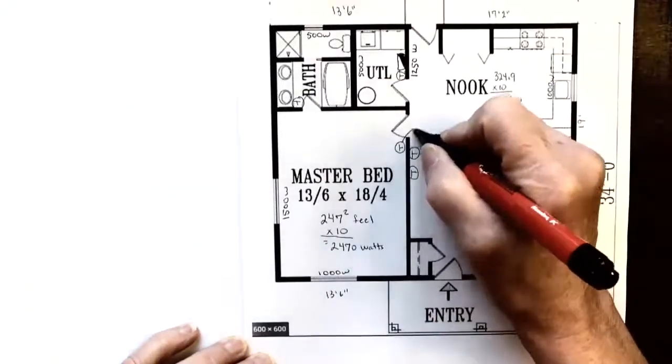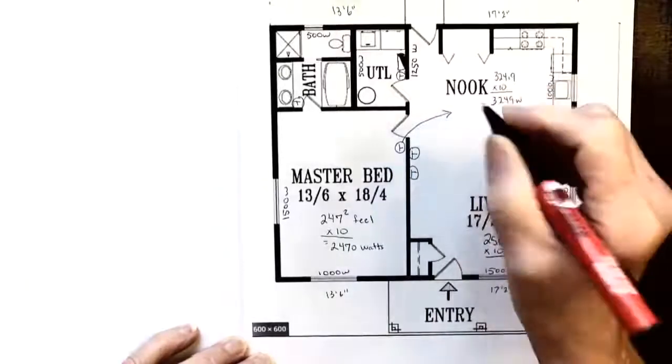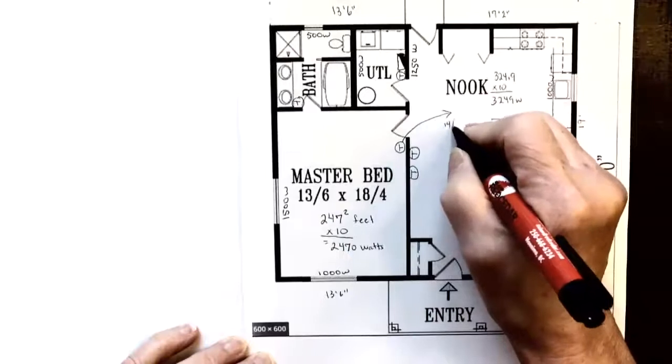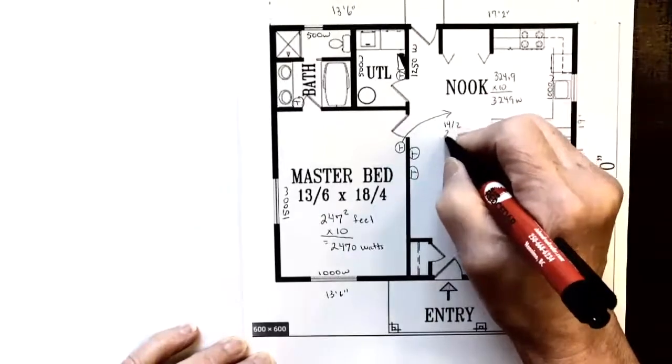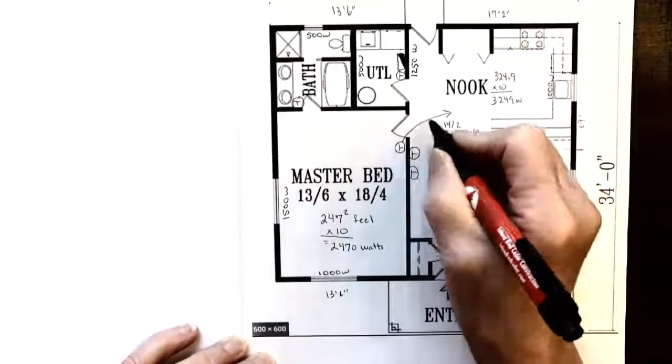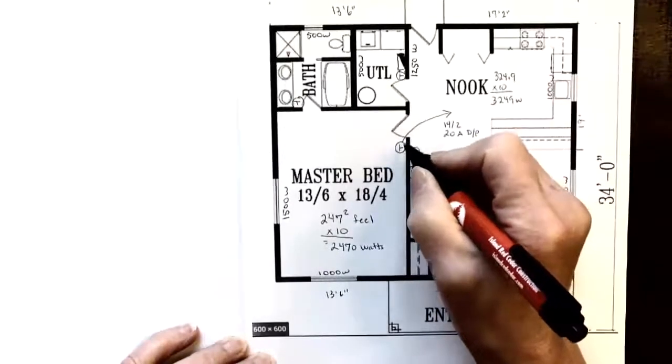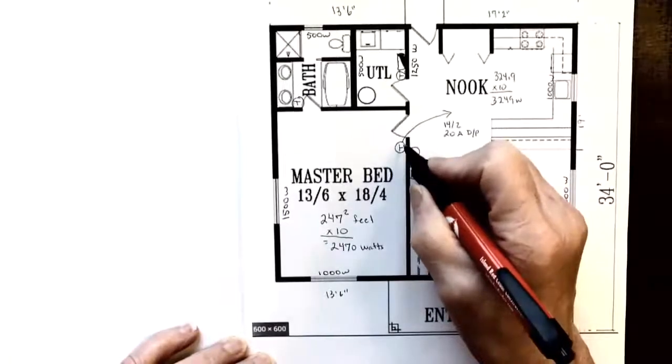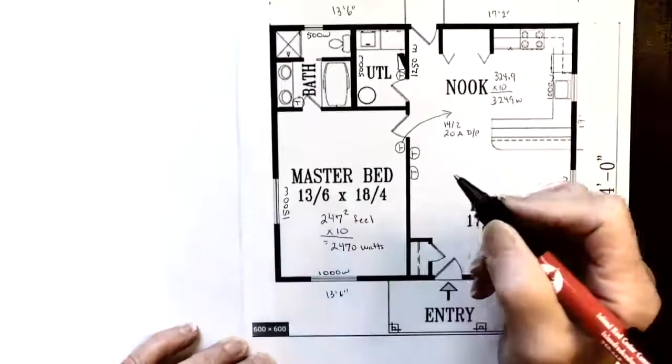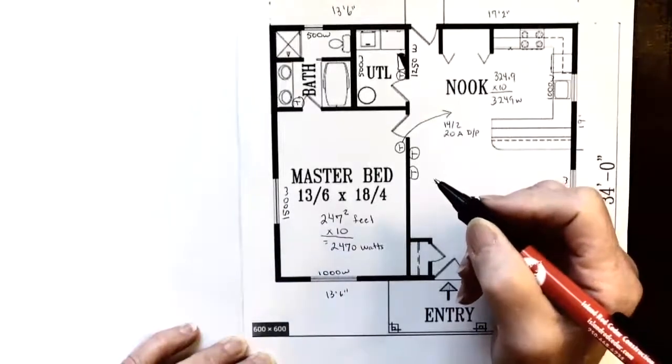What I'm going to do is take power, so my home run is going to be a 14-2. I'm going to put that on a 20 amp double pole breaker, and that gets us our hot into the thermostat. Then I want to pick up these two baseboard heaters and I have a choice.